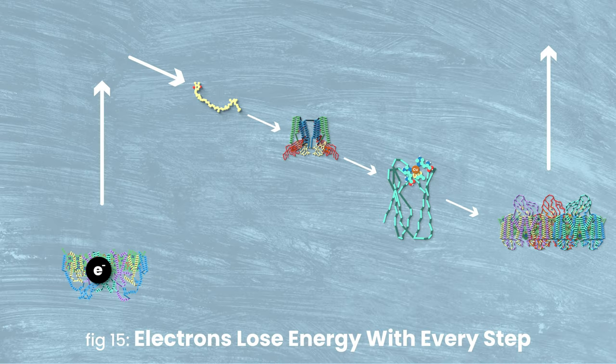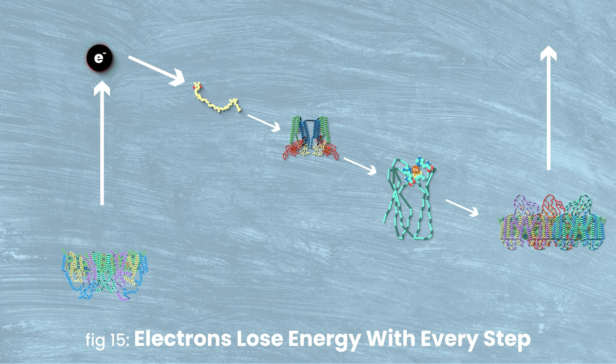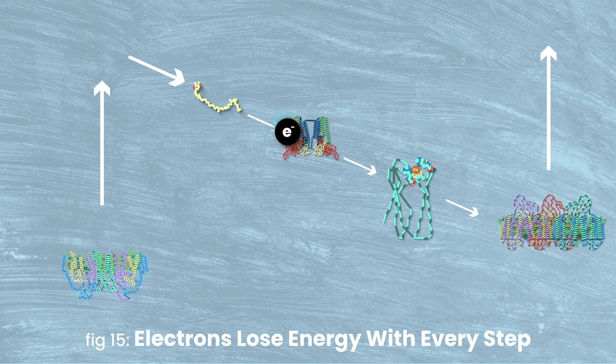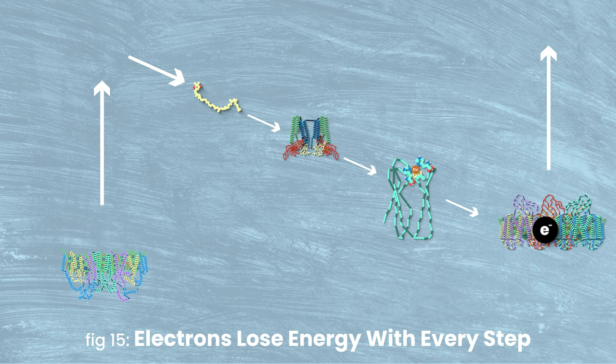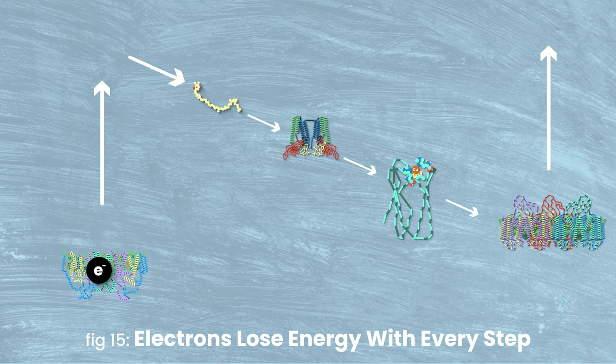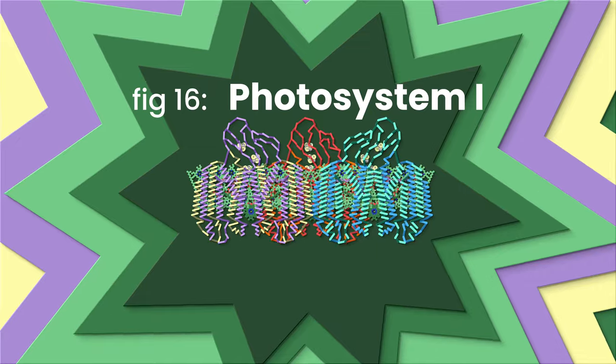But here's the thing. All the jumping that these electrons have done, they've lost a little energy throughout that process. That energy went toward a good cause, though. It went toward cramming as many protons as possible into the lumen. But in order to complete this journey, we're going to need a little bit more energy. And we've got just the tool we need to get it. Let's light these electrons up with sunlight one more time, with our last complex, Photosystem I.